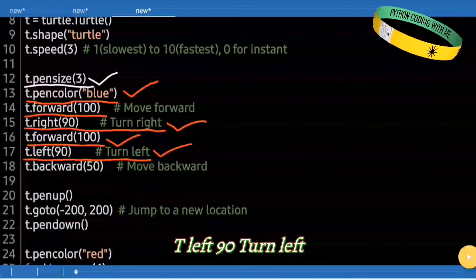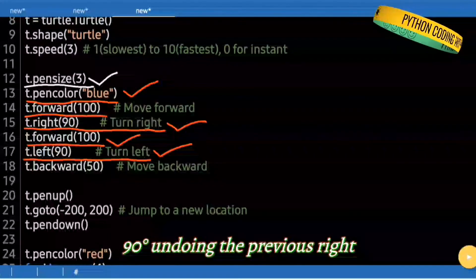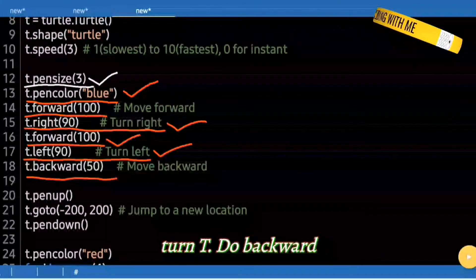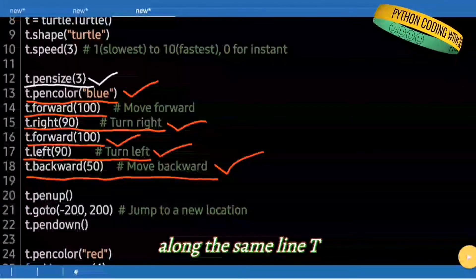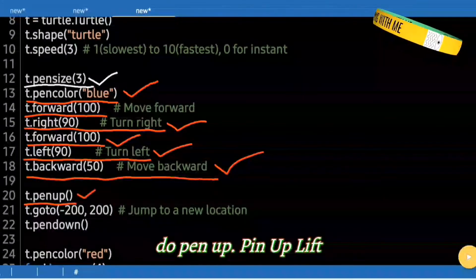t.left(90). Turn left 90 degrees, undoing the previous right turn. t.backward(50). Move backward 50 pixels back along the same line.